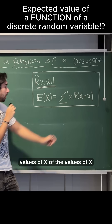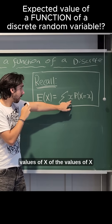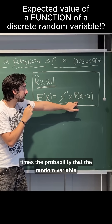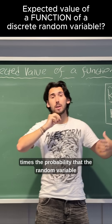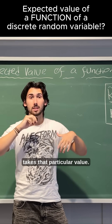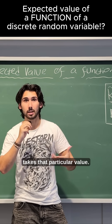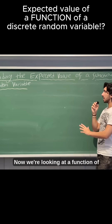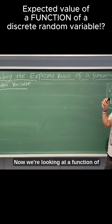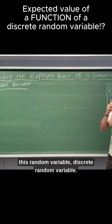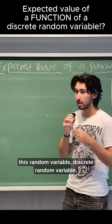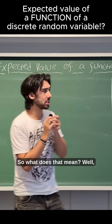The expected value of X is the sum of the values of x times the probability that the random variable takes that particular value. Now we're looking at a function of this discrete random variable — so what does that mean?